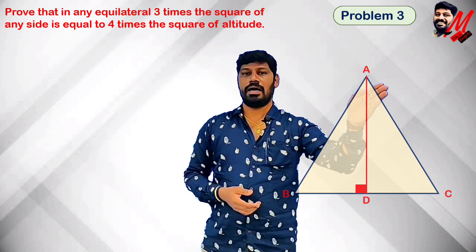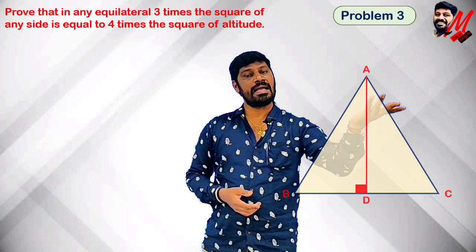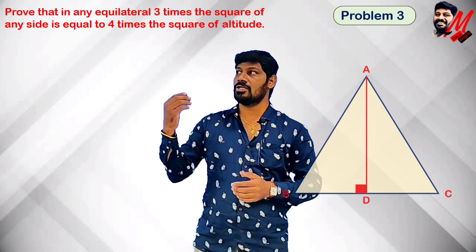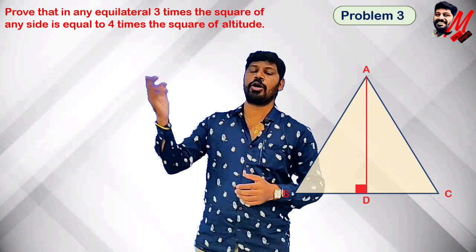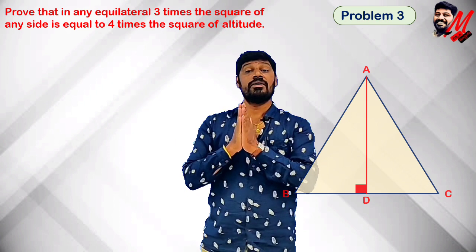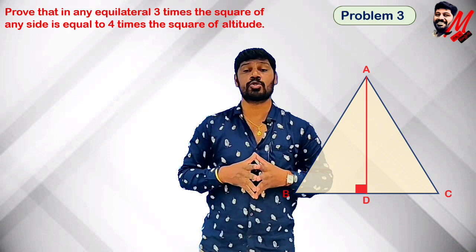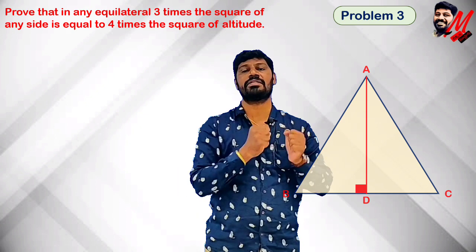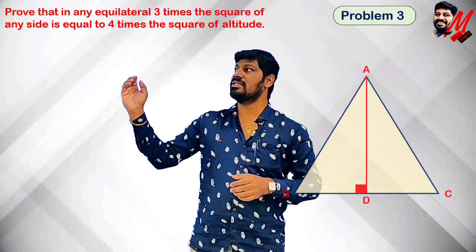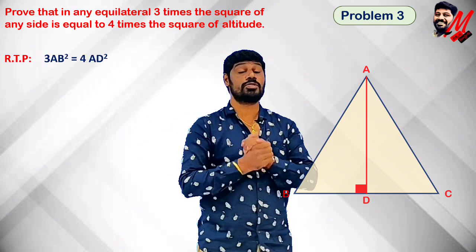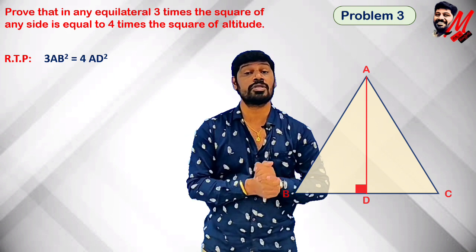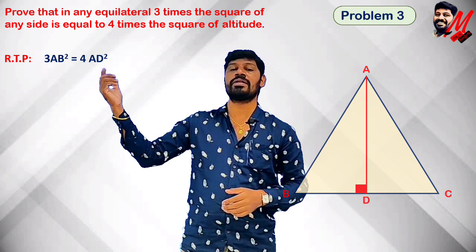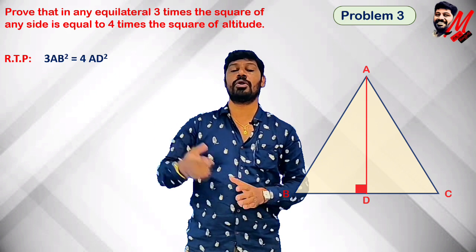So this altitude bisects the base BC entirely. According to the problem, what do we need to prove? Three times the square of any side — suppose AB is one side. Consider this picture: 3 times AB squared is equal to 4 times the altitude squared.